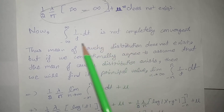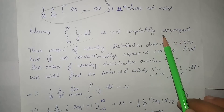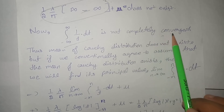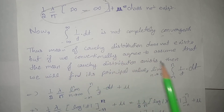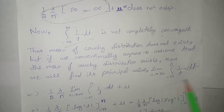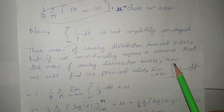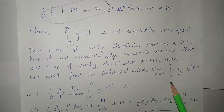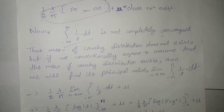The mean does not exist because this integral is not convergent. However, if we conventionally agree to assume that the mean exists, then we find the principal value of the integral, taking limits symmetrically as n approaches infinity.